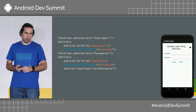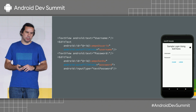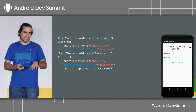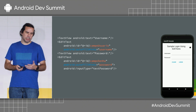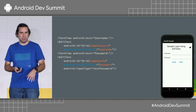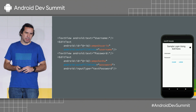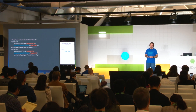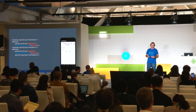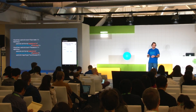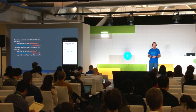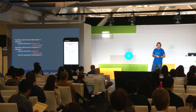The solution for this problem is simply to annotate your views with android:autofillHints. In the case of username, use 'username', and for password, use 'password'. On View.java, we actually provide hints for the common fields like username, password, credit card number, telephone number, et cetera.